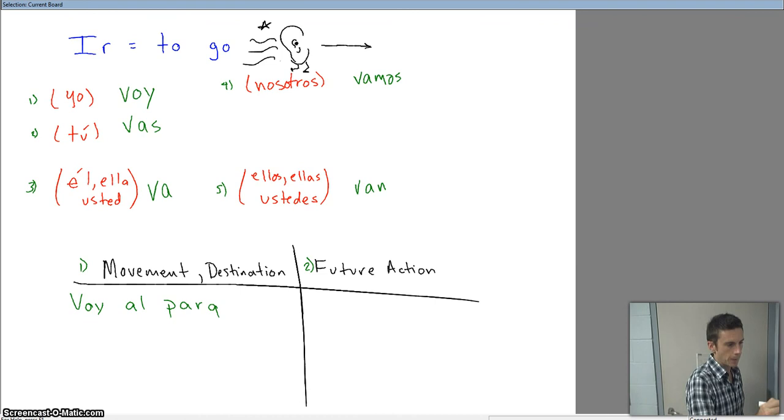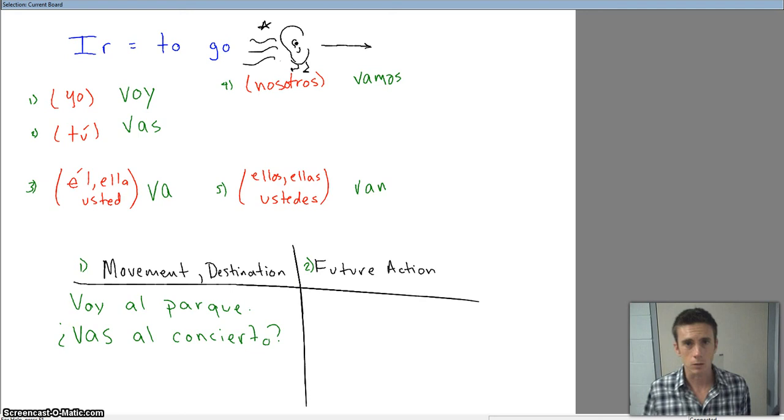I'm going to the park. Voy al parque. Voy al parque. Let's see what color we're writing in green. Vas al concierto. Vas al concierto. Van a la playa ustedes? Van a la playa ustedes? So there you have three examples of movement or destination, talking about someone going somewhere.